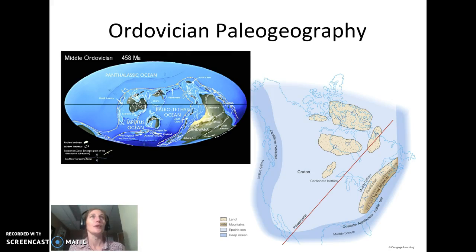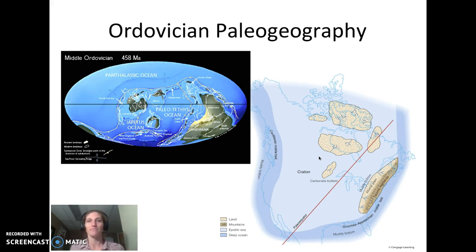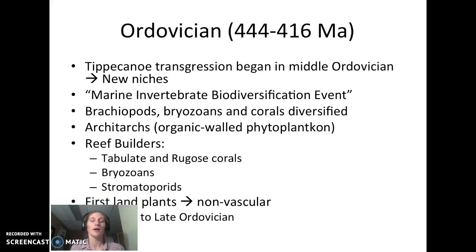Following the Cambrian we get into the Ordovician. Laurentia is still situated right at the equator and less of the craton is exposed in North America — we've gotten through that sea level rise. There are lots of places for carbonate deposition. The Ordovician was a very active time; this is when we get into the Tippecanoe transgression that started in the middle Ordovician, with new niches starting to form.